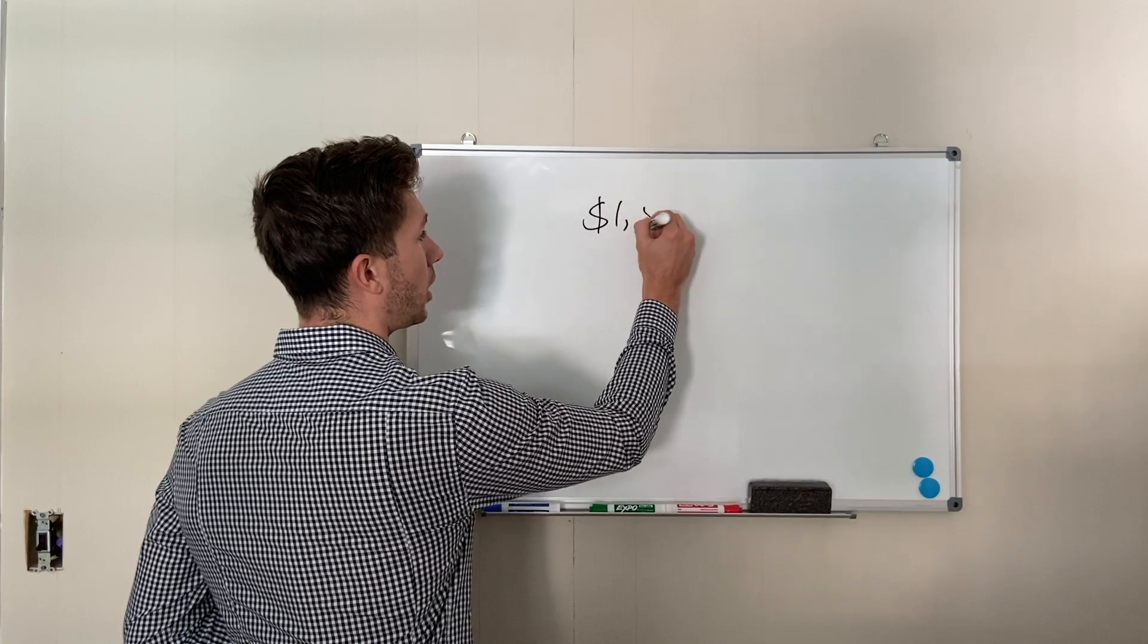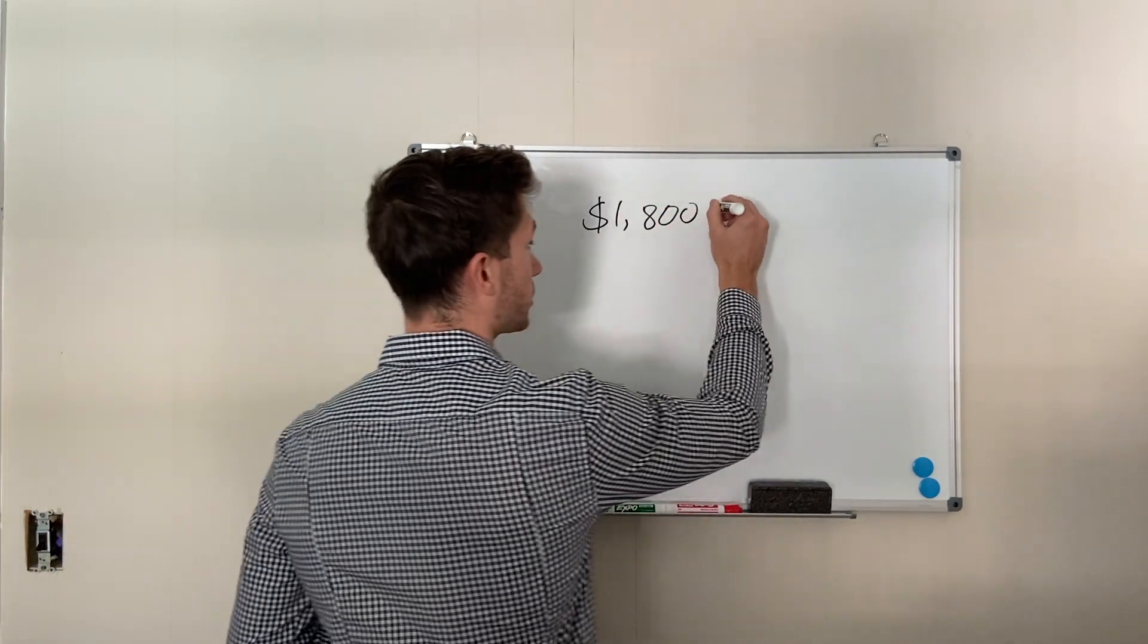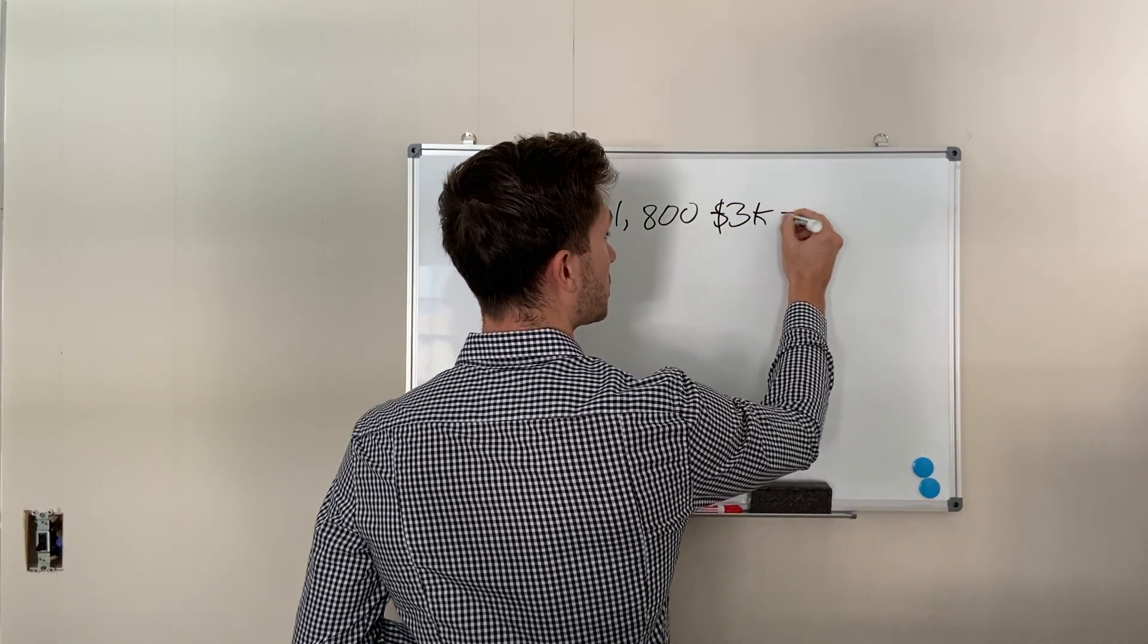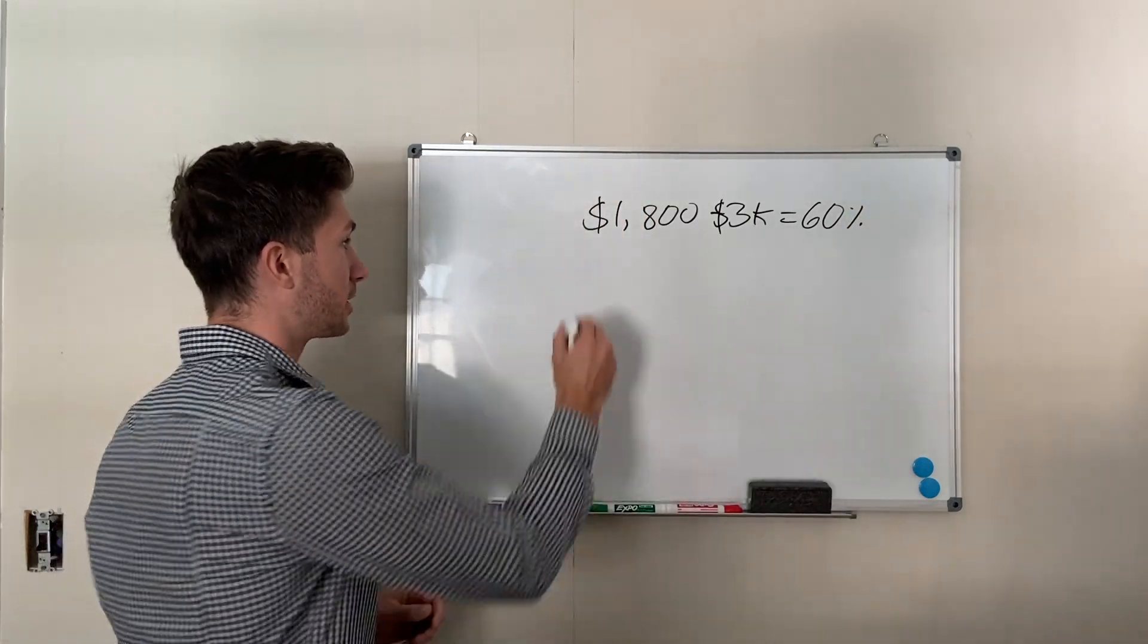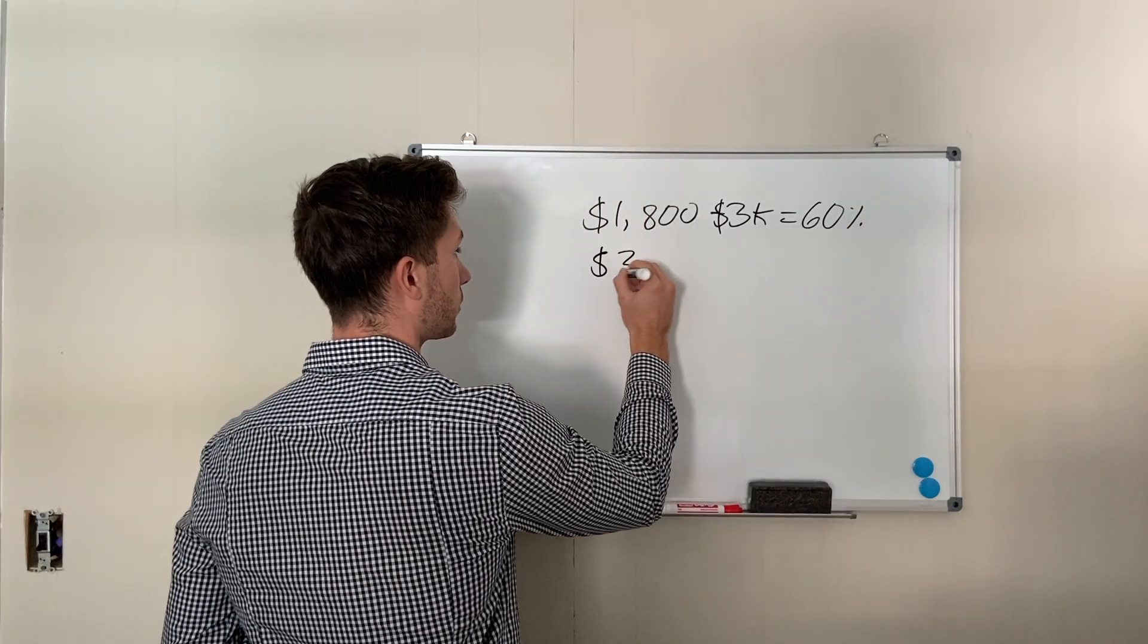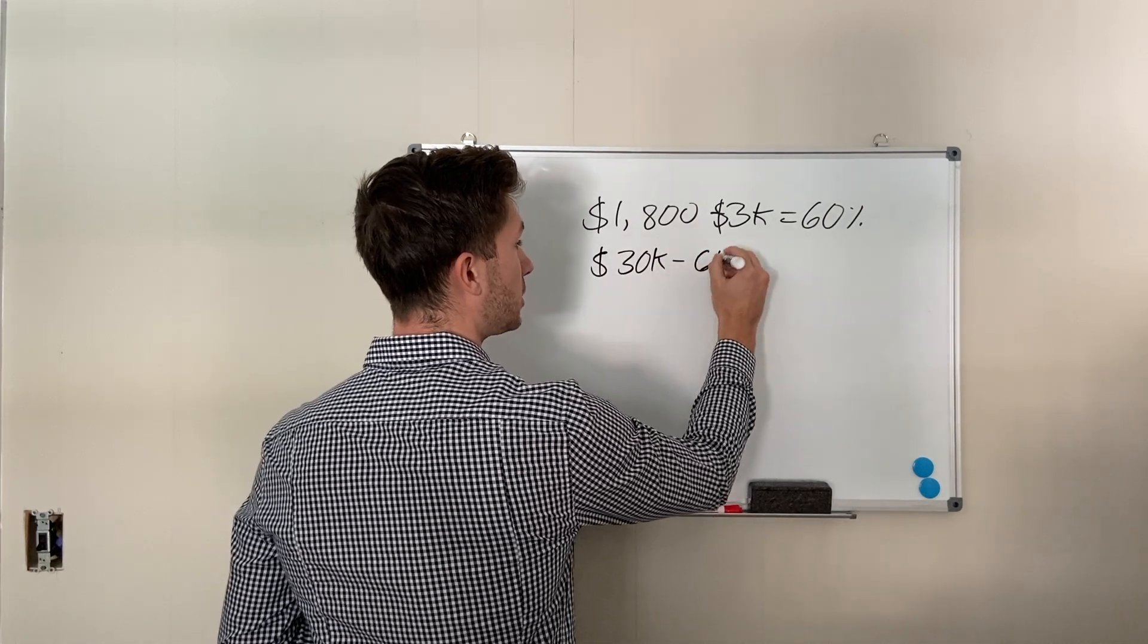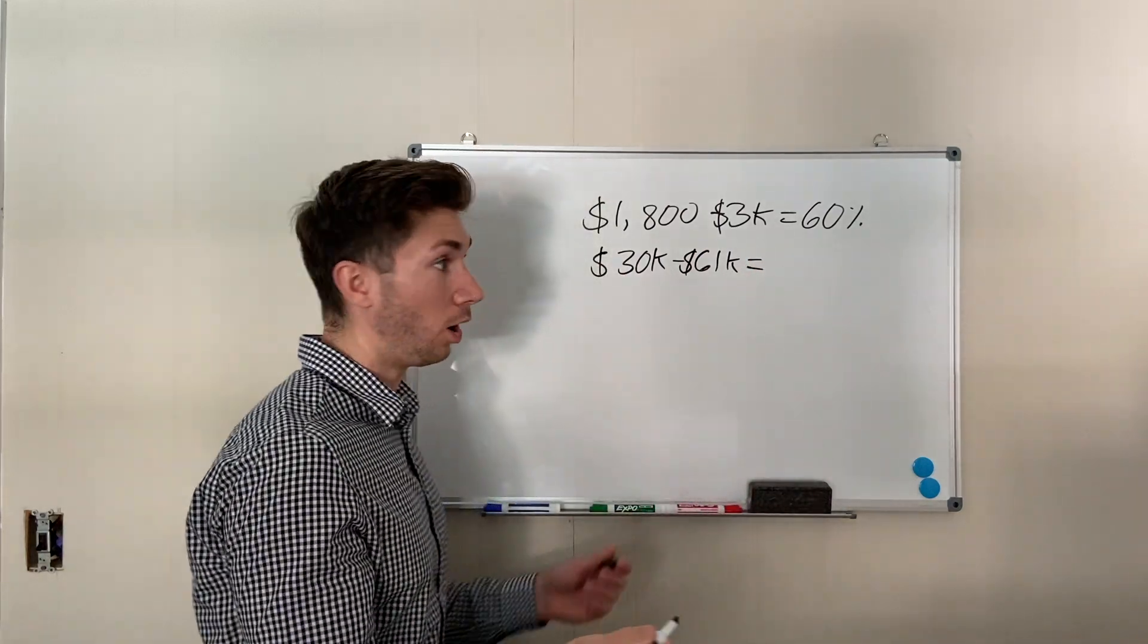I invested eighteen hundred dollars into stocks, which turned into three thousand dollars. That's a pretty good ROI, which is a sixty percent return on my money. Now I invested thirty thousand dollars into real estate, which turned into sixty-one thousand dollars, which is one hundred percent ROI.